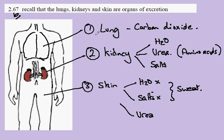So, the three organs of excretion are the lungs, the kidneys, and the skin.